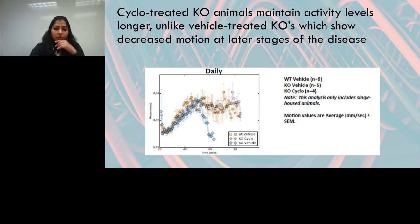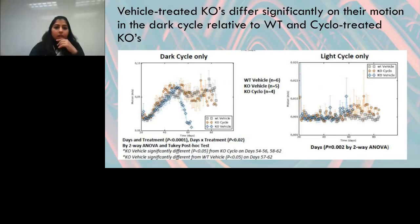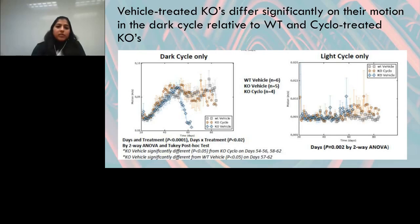We also assessed motion in circadian cycles, revealing an interesting finding: motion parameters differed significantly for NPC mutants in the dark cycle but did not differ as much in the light cycle. Furthermore, cyclodextrin-treated mutant animals were able to recover their motion within the dark phase, making them comparable to wild types — a nuanced finding that would not have been captured by traditional behavioral assays alone.